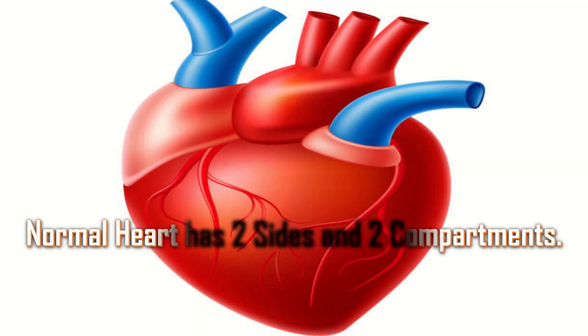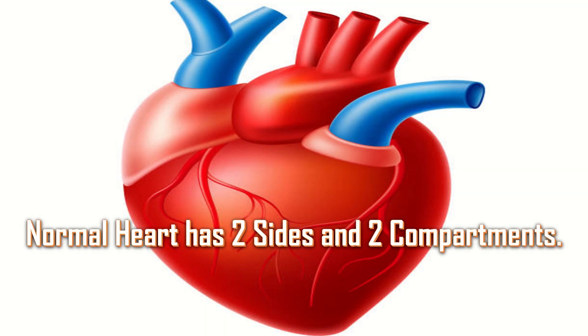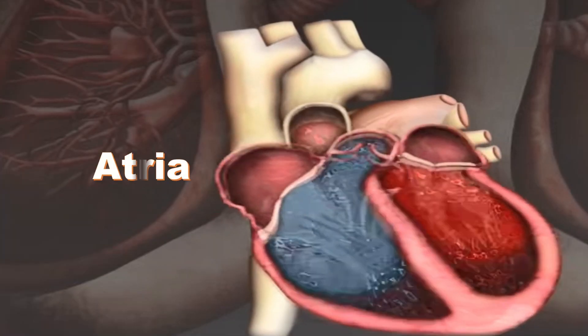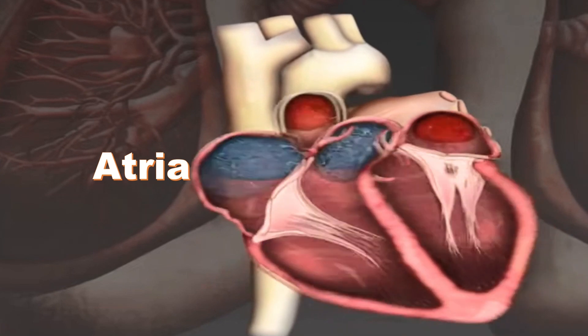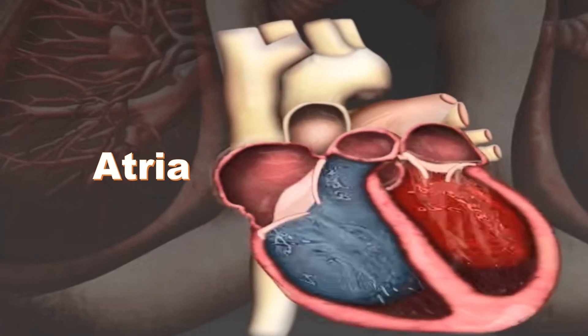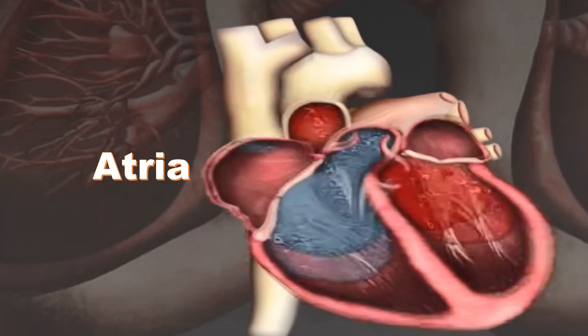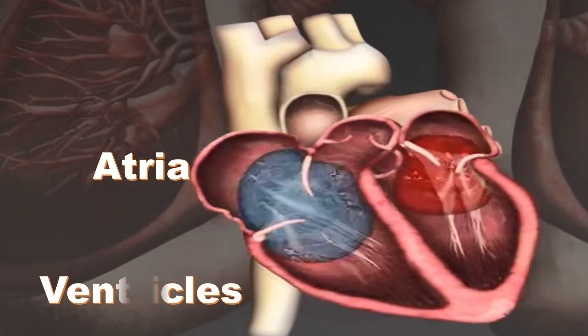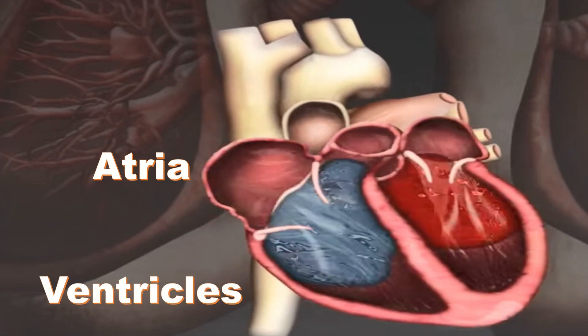A normal heart is divided into two sides — left and right — separated by a wall with no gap or hole in it. On each side there are two compartments: an upper and lower compartment. The upper compartments are known as atria, which receive blood, and the blood is then passed to the lower compartments known as ventricles, which pump it out.